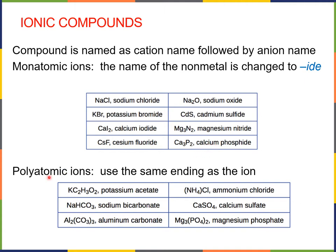Some ionic compounds contain polyatomic ions. In that case, the ending from the anion is simply the name of the polyatomic ion. So this compound here, KC2H3O2, is potassium acetate — here you have the acetate ion. Here you have another one: Na is sodium, just like in sodium chloride. HCO3 has an interesting naming convention. We may call it bicarbonate, or we may also call it hydrogen carbonate. CO3 is carbonate, and once we add an H to the CO3 ion, it can also be called hydrogen carbonate, or its common name bicarbonate.